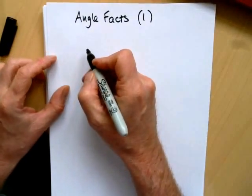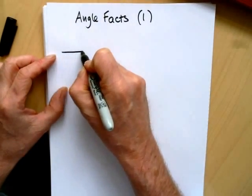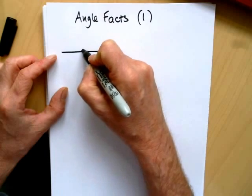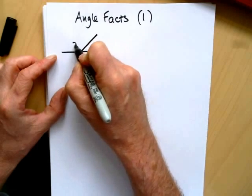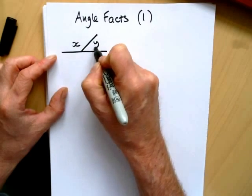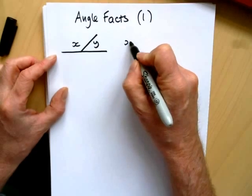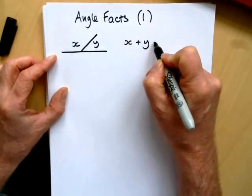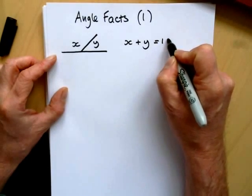Right, let's look at angle facts. We'll start with two very important ones that are used many, many times. So if I have two angles that are on a straight line, then they make 180 degrees.